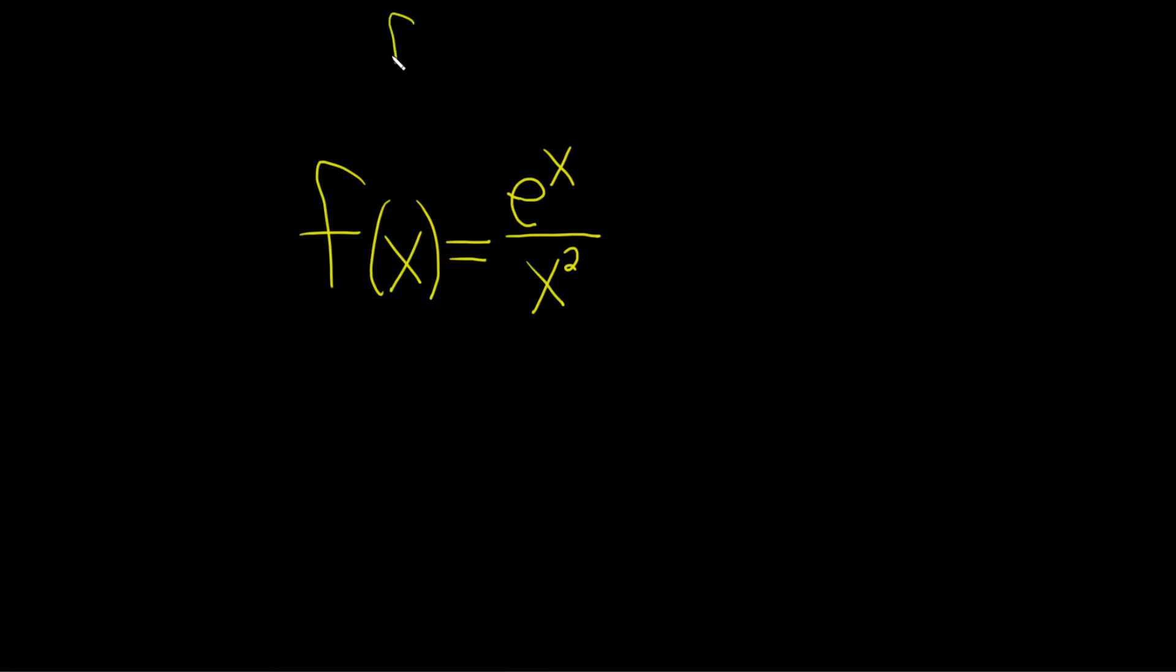The quotient rule says you have a function f, and you divide it by a function g, and you take the derivative. Think of f as your top function and g as your bottom.